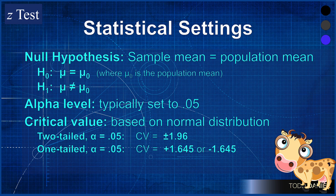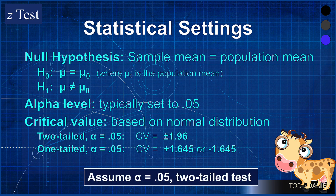However, for all of these examples, unless you are directed otherwise, you can assume — especially for teaching purposes — that we are using an alpha of 0.05 two-tailed test.